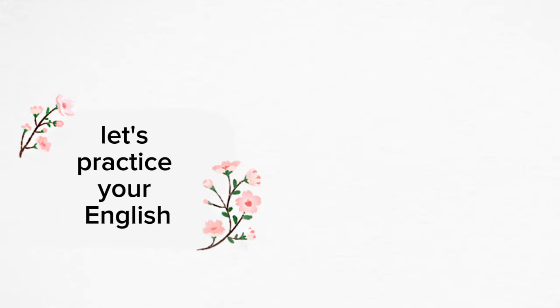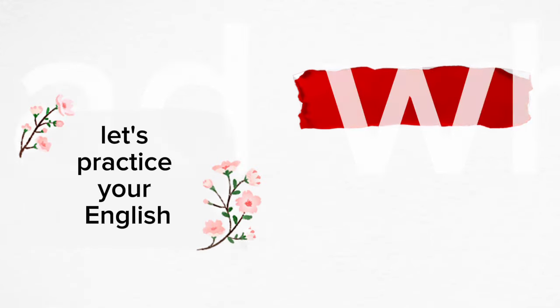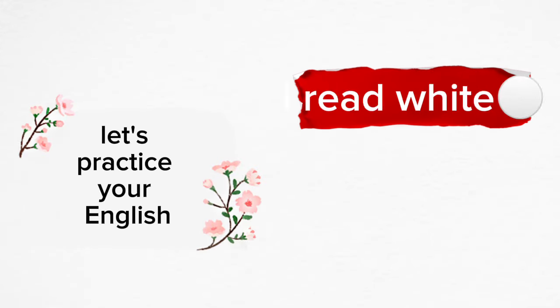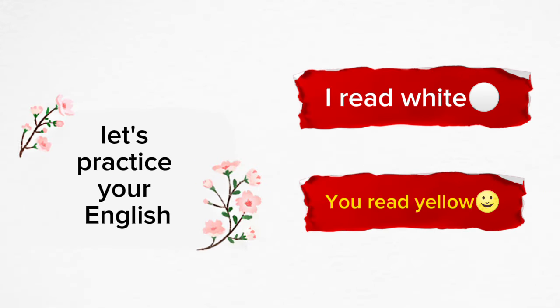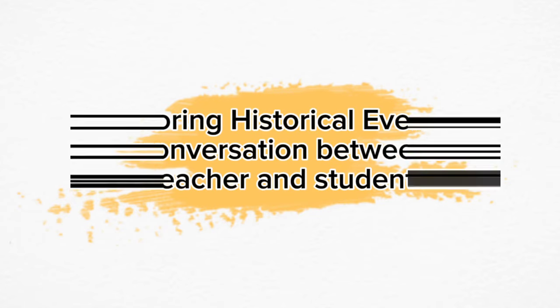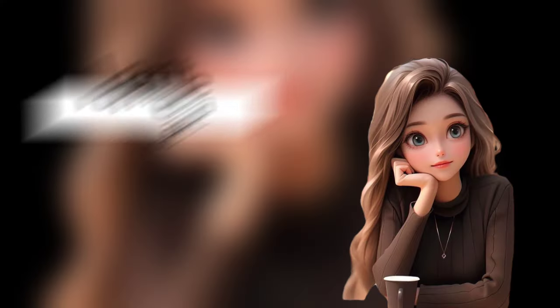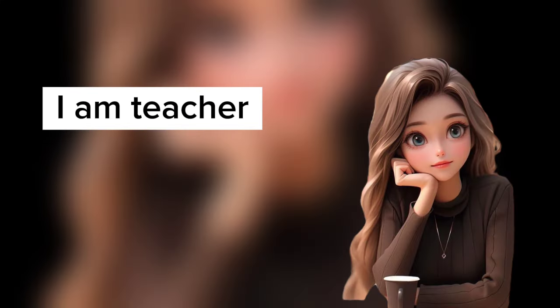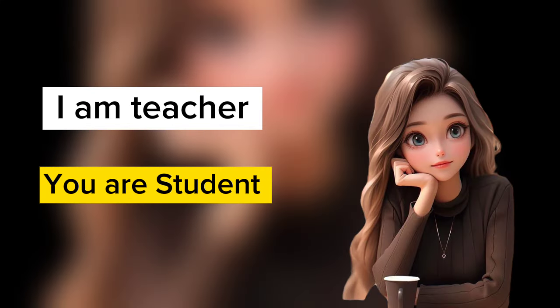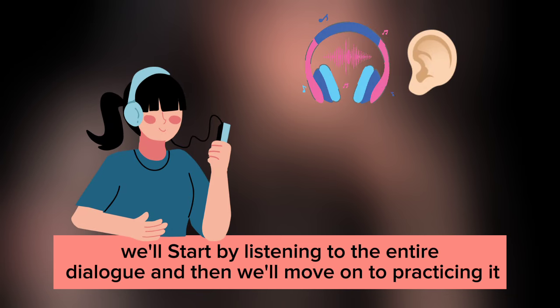Let's practice your English. I read white, you read yellow. Exploring historical events — a conversation between teacher and student. I'll play the role of teacher and you'll play the role of student. We'll start by listening to the entire dialogue and then we'll move on to practicing it.